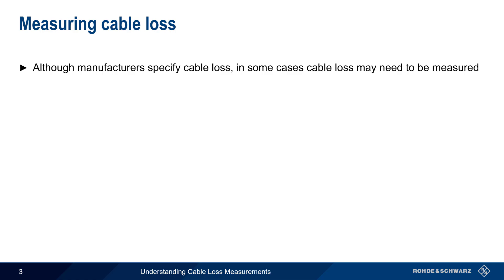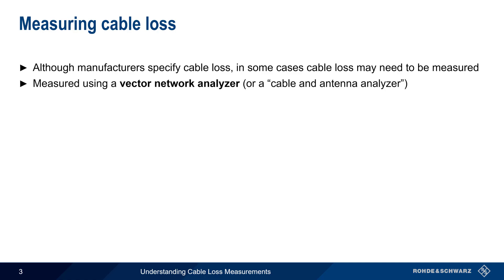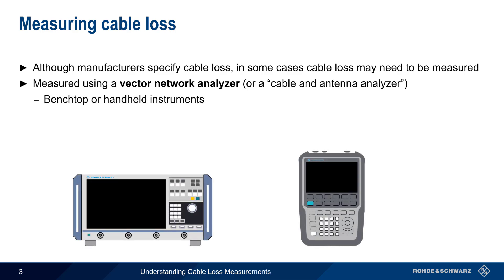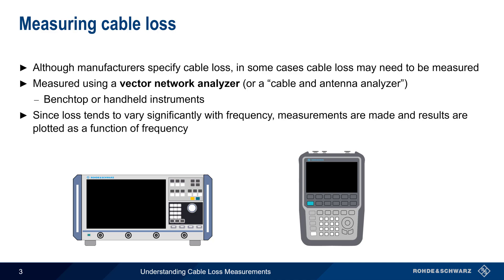This is especially true when the cable type or manufacturer is unknown, or when cable loss is affected by connectorization, wear, damage, etc. The most common way of measuring cable loss is using a Vector Network Analyzer, or VNA. VNAs intended primarily for field use are sometimes also referred to as cable and antenna analyzers. These analyzers may be either benchtop or handheld instruments. Because cable or insertion loss tends to vary significantly with frequency, cable loss measurements are usually made and results are plotted as a function of frequency.